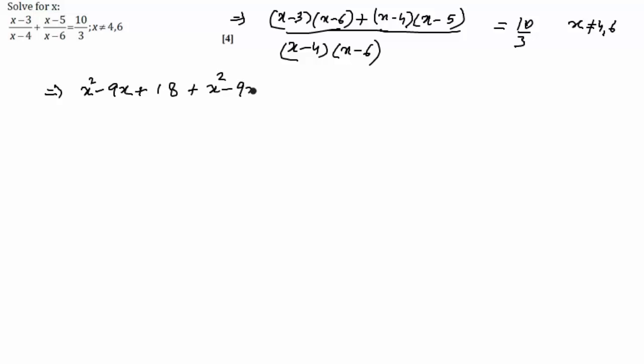x square minus 9x plus 20 upon x square minus 10x plus 24 equal to 10 by 3. Cross multiplying 3 to x square minus 18x